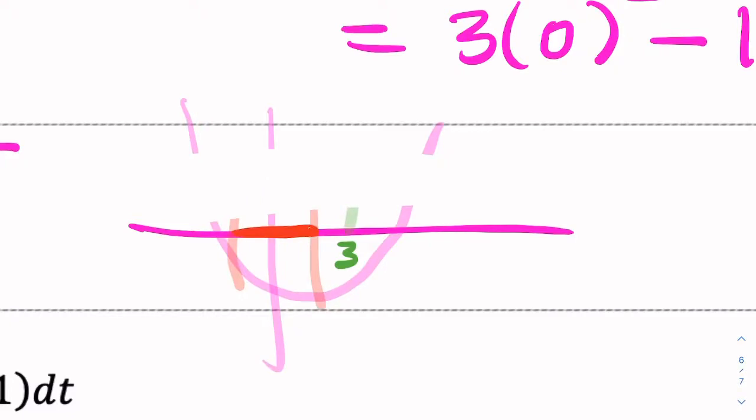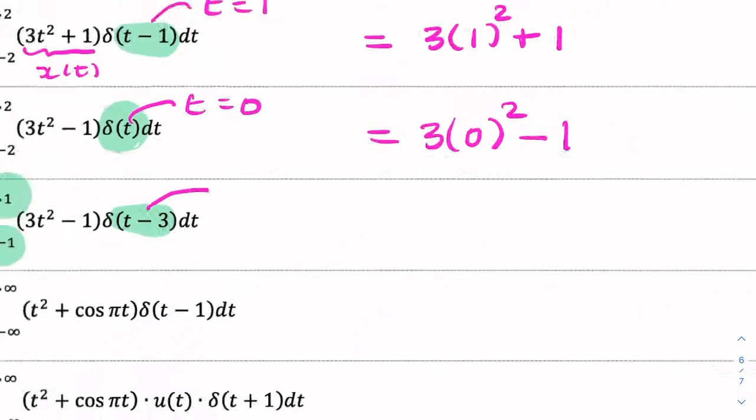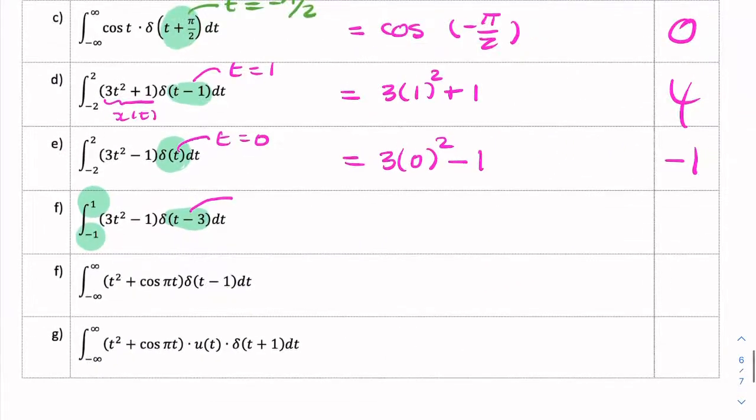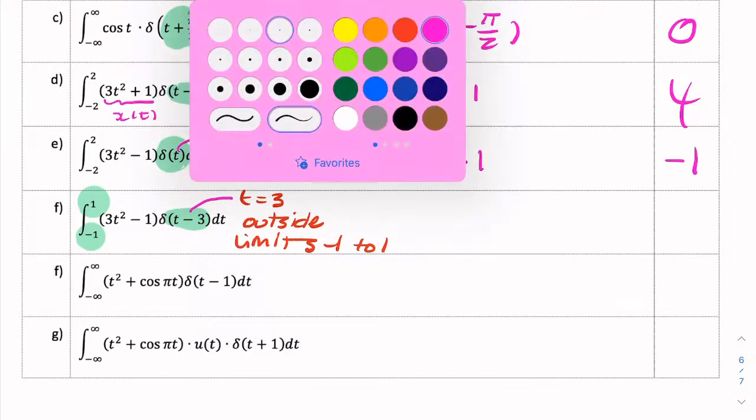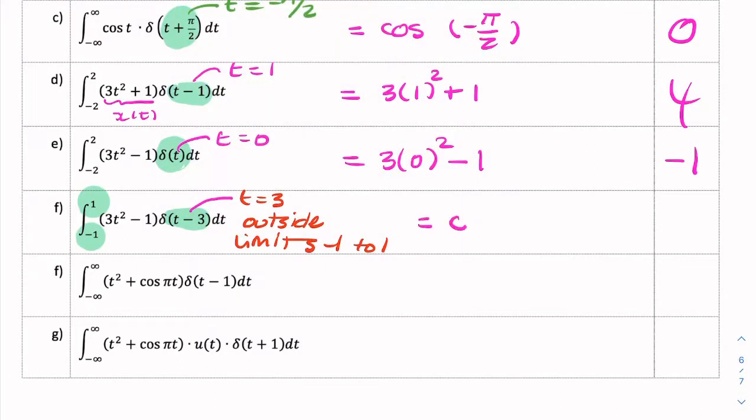So in this interval, the Dirac function doesn't exist, it's never non-zero. Because our impulse here, t equals 3, is outside the limits of the integration.